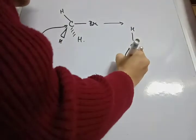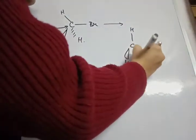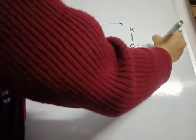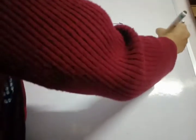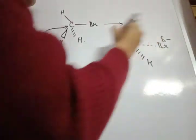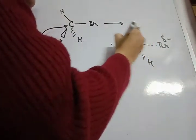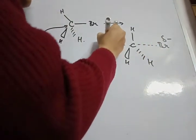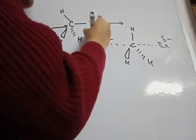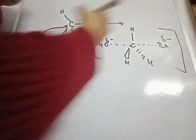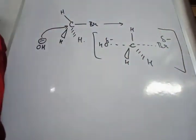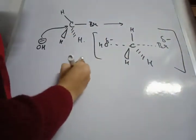This is the transition state, with a partial negative charge (δ⁻) on OH and the carbon in a pentacoordinate arrangement. This transition state is actually hypothetical.